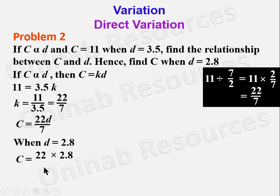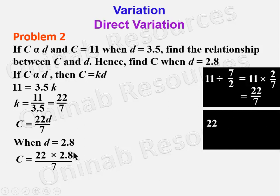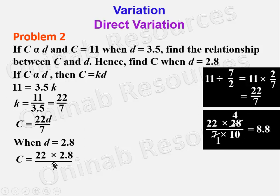When D is 2.8, C will be equal to 22 times 2.8 divided by 7. Converting 2.8 to a fraction gives 28 over 10. We can simplify: 7 goes into 28 to give 4, then 22 times 4 gives 88, divided by 10 gives 8.8. So C is 8.8 when D is 2.8.